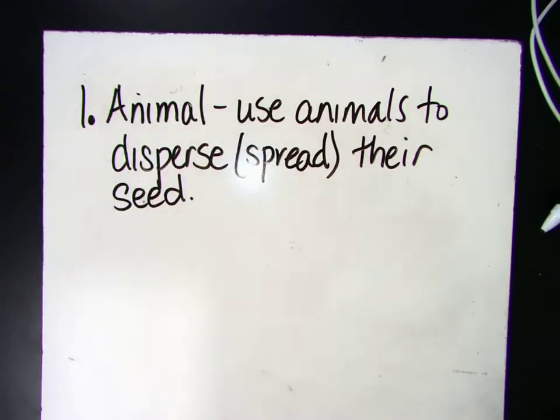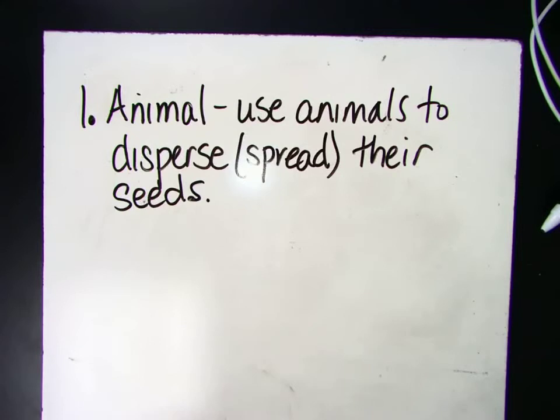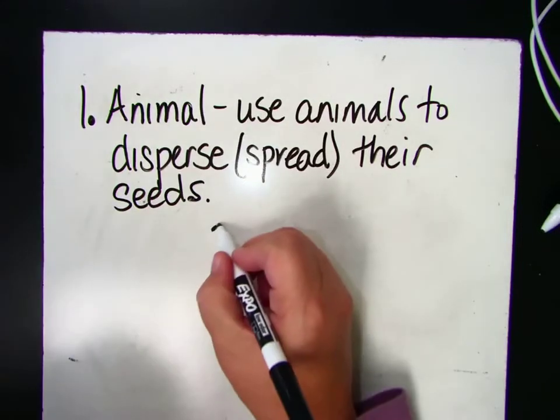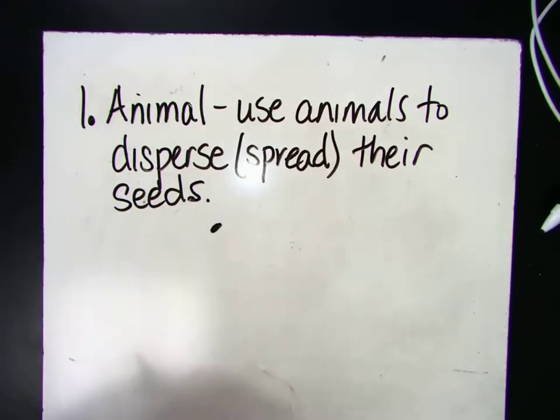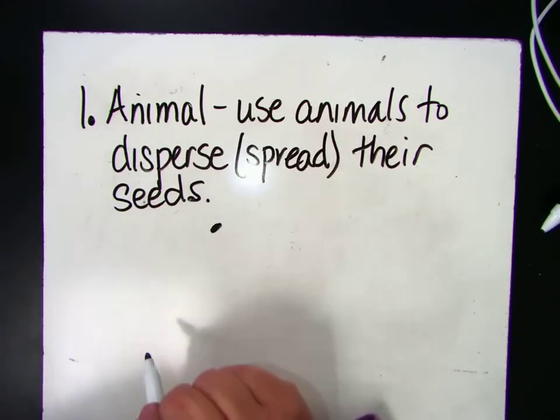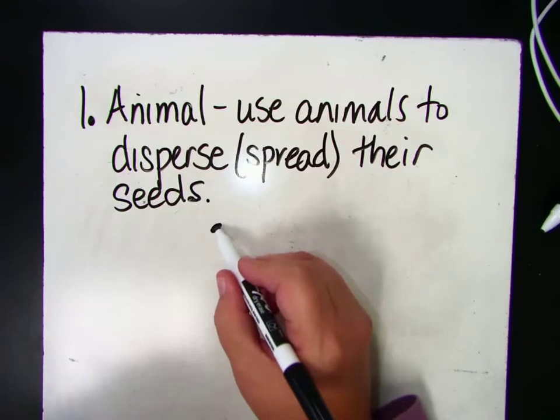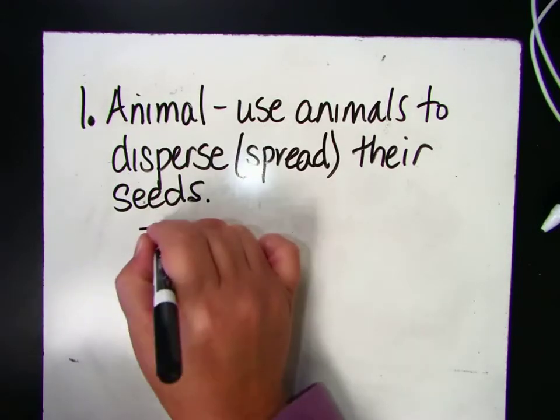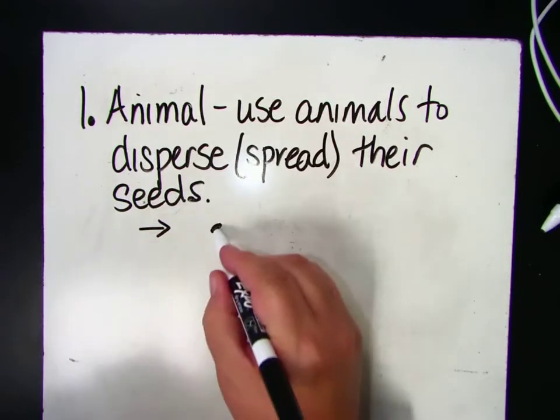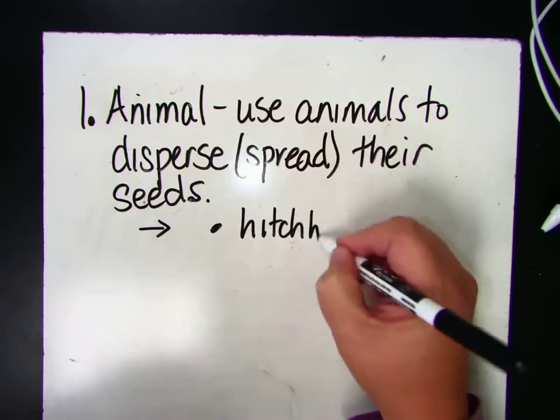And one of the things that we talked about in class was hitchhikers. And those are the little fuzzy things that you get on your clothes, and they stick to your clothes. Those are actually little seeds. That's the plant's way of dispersing its seeds by having those little hitchhikers stick on you.